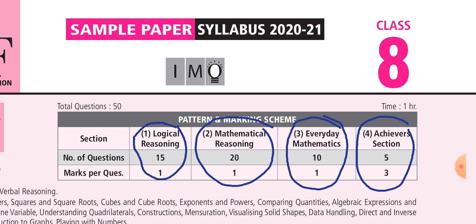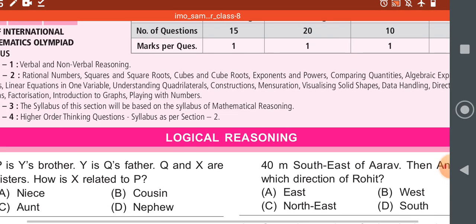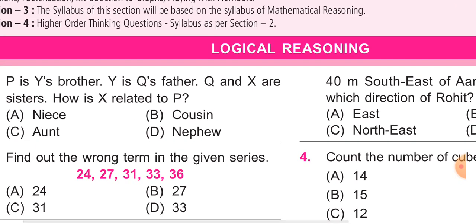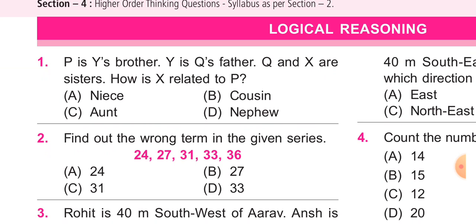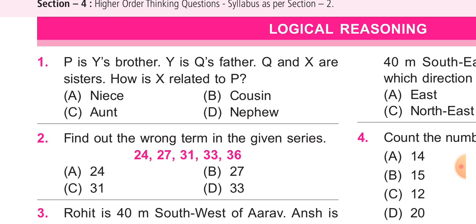Let's move to the first section, that is logical reasoning. The first question is: if P is Y's brother, and Y is Q's father, and Q and X are sisters, how is X related to P?